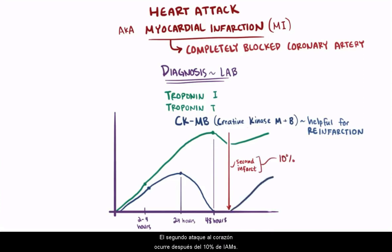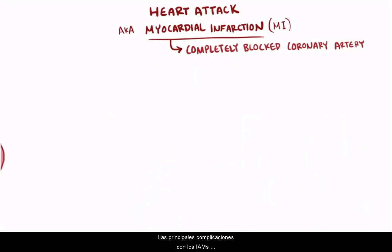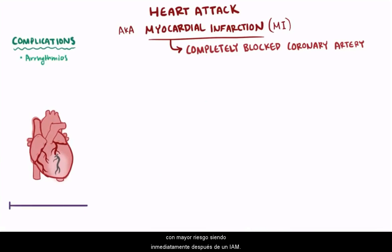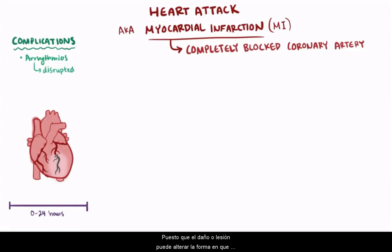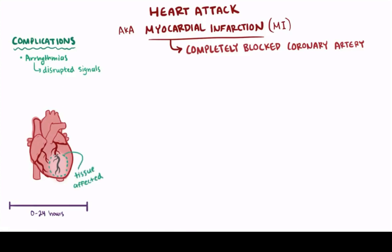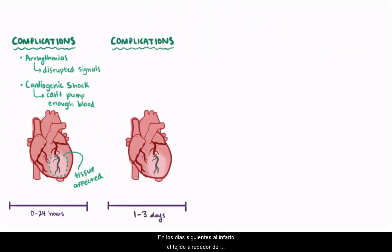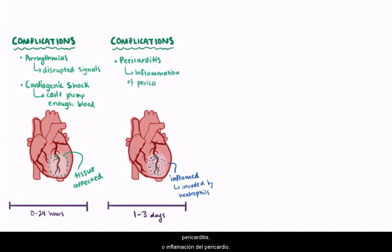A second heart attack happens following 10% of MIs. A major complication with MIs are arrhythmias, or abnormal heart rhythms, with the highest risk being immediately following an MI, since the damage or injury can disrupt how the cells conduct electrical signals. Depending on how much contractile or muscle tissue is affected, patients' hearts might not be able to pump enough blood to the body, resulting in cardiogenic shock. In the days following an infarction, the tissue around the infarcted area becomes inflamed and is invaded by neutrophils, which can lead to pericarditis — inflammation of the pericardium.